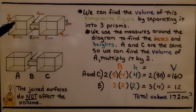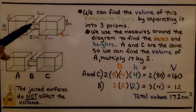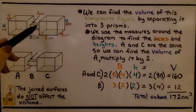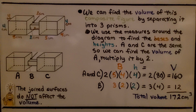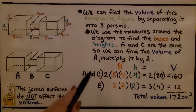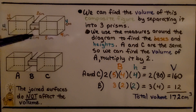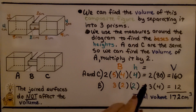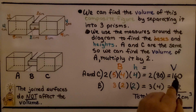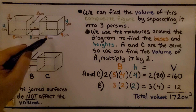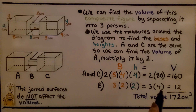Take a look at this composite figure. We have a box on each side with a little rectangular prism connecting them. We can find the volume by separating it into three prisms: A, B, and C. We use the measures around the diagram to find the bases and heights. A and C are the same, so we find the volume of A and multiply by two: two times the base area of five times four, times the height of four. That's two times eighty, giving a volume of one hundred sixty centimeters cubed for both.